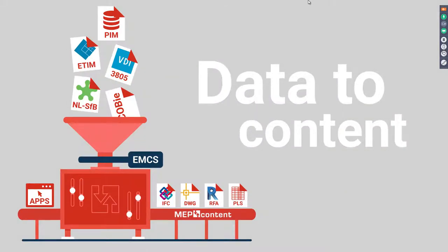We offer high-quality content, which takes a lot of work. We have a large team working here in Bodegraaf and also in other parts of Europe creating this content. This diagram gives you an overview of exactly how this is done. It all starts with the PIM — the Product Information Management system for manufacturers. This is where they store parts of their product data, and the data in this system is the source for all of our content. Manufacturers provide us with this data, and we match it with standards such as ETIM, VDI, COBie, and SFB, depending on the country.